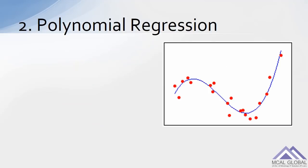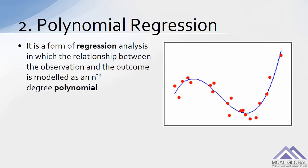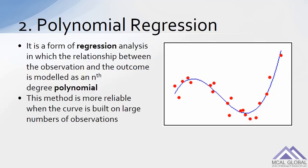Number two: polynomial regression. It is a form of regression analysis in which the relationship between the observation and the outcome is modeled as an nth degree polynomial. The method is more reliable when the curve is built on a large number of observations.